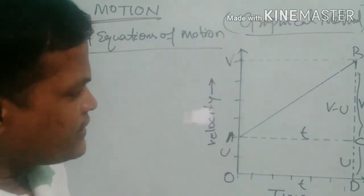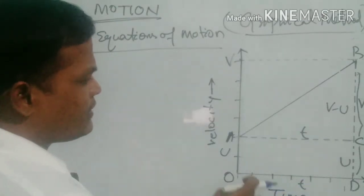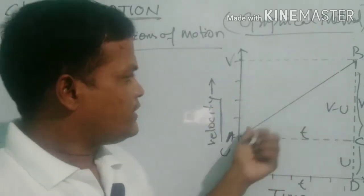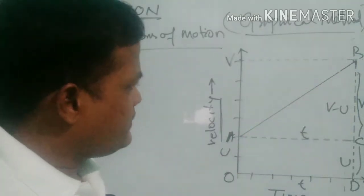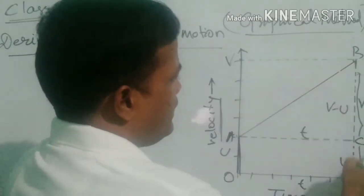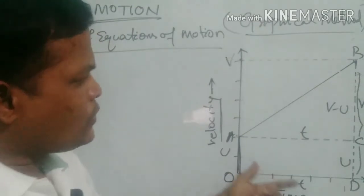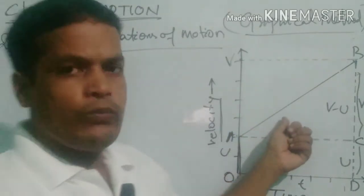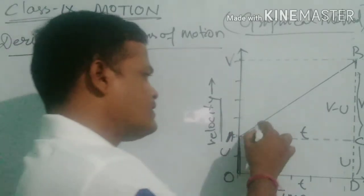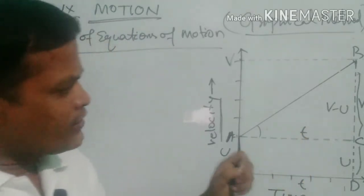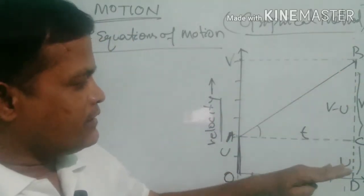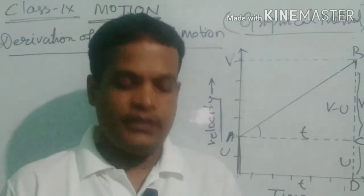So how are these equations derived? You know that this is a velocity-time graph. On the X-axis, time is taken and on the Y-axis, velocity is taken. A body here is in uniformly accelerated motion. This is the initial velocity, and after time t it attains a final velocity v. In this figure we are going to find the slope and the area covered.